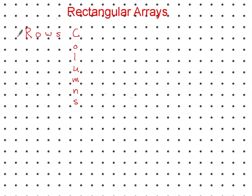Rows go side to side or horizontally. Columns are up and down or vertical. And how I remember that is the L in columns goes up and down vertical. So that's how I can tell the difference between rows and columns.